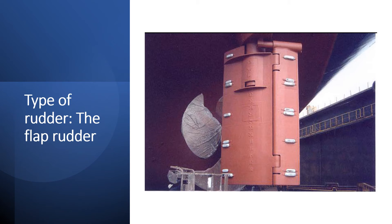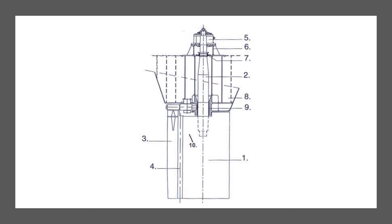The flap rudder has a hinged flap at the back of a rudder blade. This flap is moved mechanically by the flap guide at the top of the rudder, in such a way that the flap's turning angle is twice as large as the turning angle of the main rudder plate. When the maximum rudder angle is 45 degrees, the flap has a maximum angle of 90 degrees with respect to the ship.